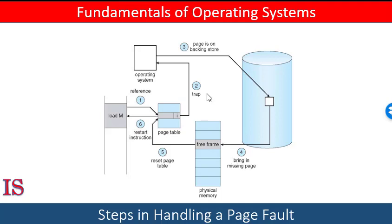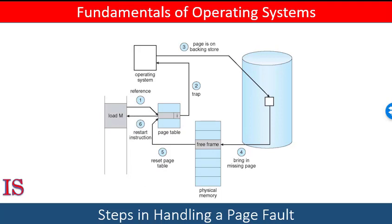If the reference is invalid, we terminate the process. If it was valid but we have not yet brought in that page, we now page it in. Third, we find a free frame by taking one from the free frame list, for example. Fourth, we schedule a secondary storage operation to read the desired page into the newly allocated frame. Fifth, when the storage read is complete, we modify the internal table and the page table to indicate that the page is now in memory. Sixth, we restart the instruction that was interrupted by the trap.